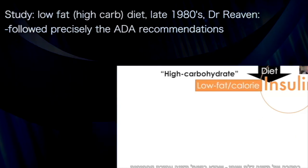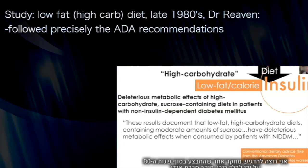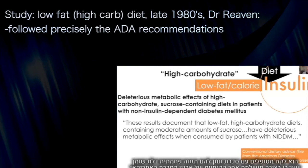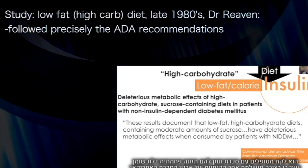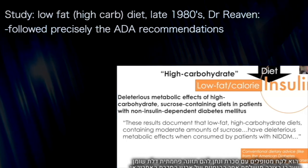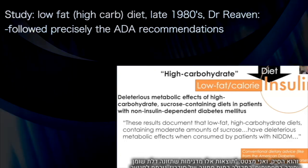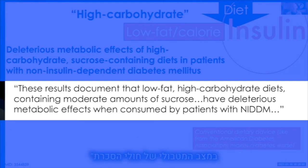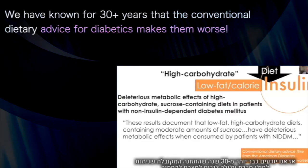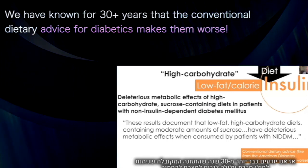In the case of a low-fat — synonymously high-carbohydrate — diet, I want to highlight one study done in the late 1980s by Gerald Reaven, a legendary diabetes scientist. He took patients with type 2 diabetes and put them on a high-carbohydrate, low-fat diet following perfectly the recommendations of the American Diabetes Association. He concluded: these results document that low-fat, high-carbohydrate diets containing moderate amounts of sucrose have deleterious metabolic effects when consumed by patients with diabetes. We've known for 30-plus years that conventional dietary advice for diabetics may make the situation worse.